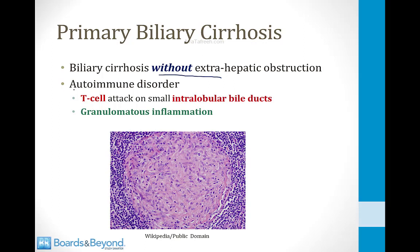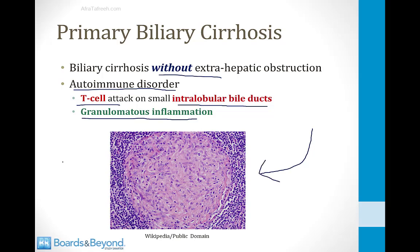Primary biliary cirrhosis is an autoimmune disorder mediated by T cells, and they attack intralobular bile ducts. T cells and intralobular bile ducts are high-yield things to remember for Step 1. It's also high-yield to remember that this is a form of granulomatous inflammation — there is a picture of a granuloma on screen to remind you of that fact.